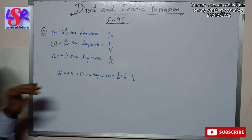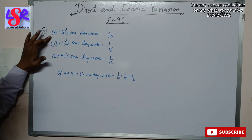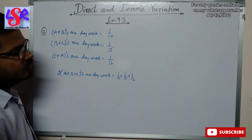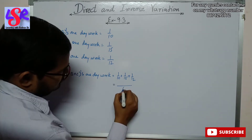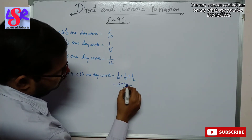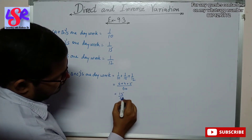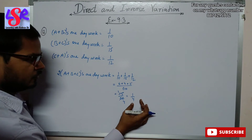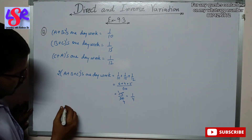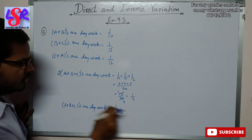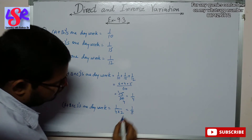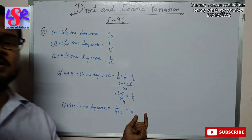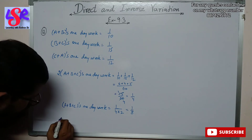Adding all three equations gives twice of A plus B plus C's one day work, since each of A, B and C appears twice. This equals 1 upon 10 plus 1 upon 15 plus 1 upon 12. Taking LCM of 10, 15 and 12 as 60, we get 6 plus 4 plus 5 = 15 upon 60, which simplifies to 1 upon 4. So A plus B plus C's one day work equals 1 upon 8. Therefore time taken working together equals 8 days.